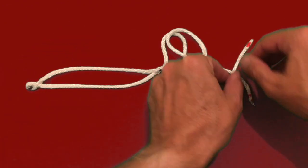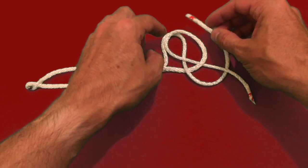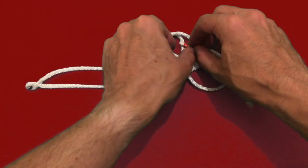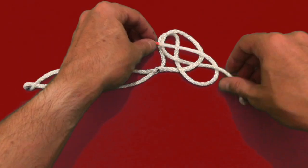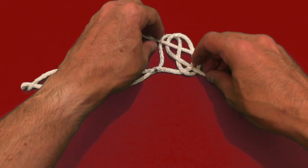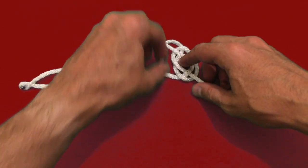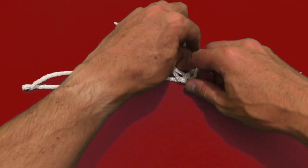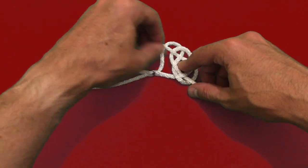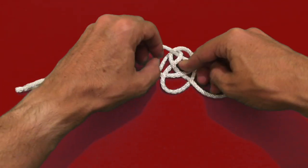Then get the lower tail and go under, over, and then under, pulling it tight but creating a hole in the middle which you need to maintain to complete the knot.